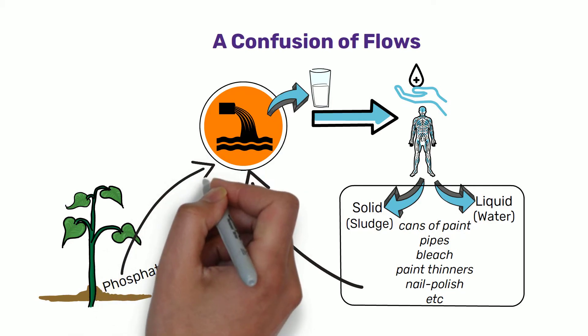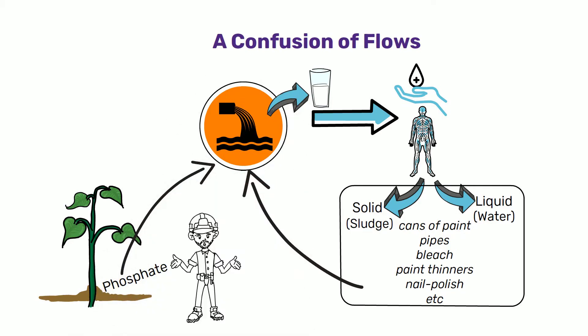But phosphate also occurs naturally in sludge and other organic waste. What if we could design a system that safely captures the phosphate already in circulation, rather than discarding it as sludge?